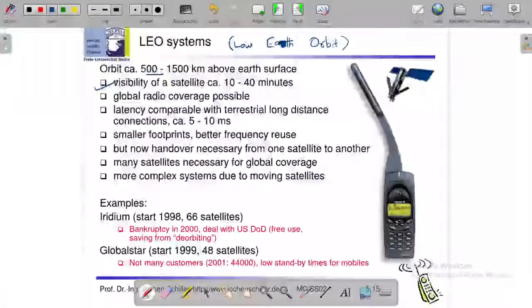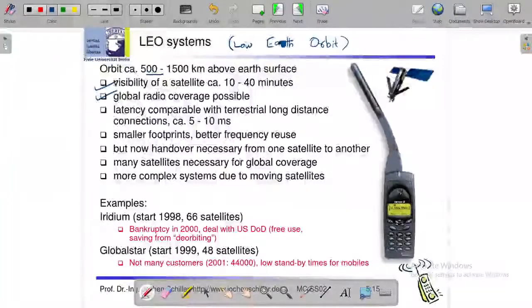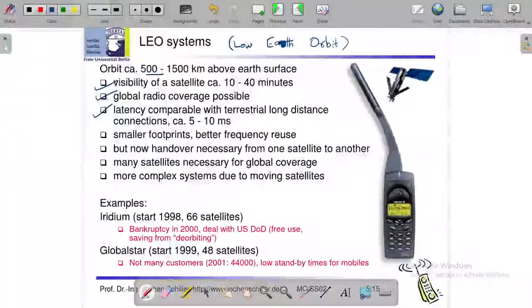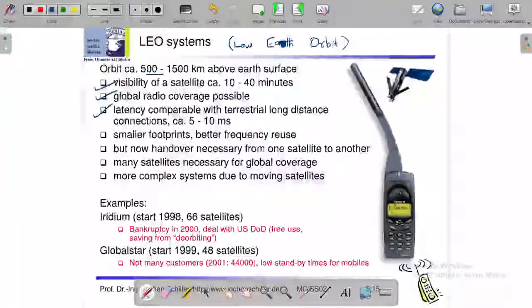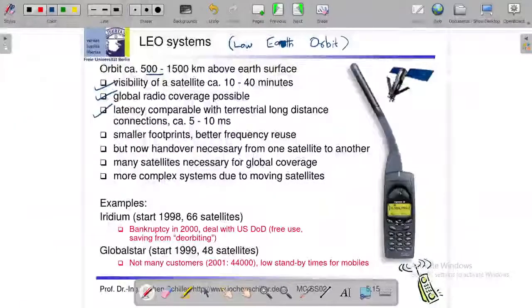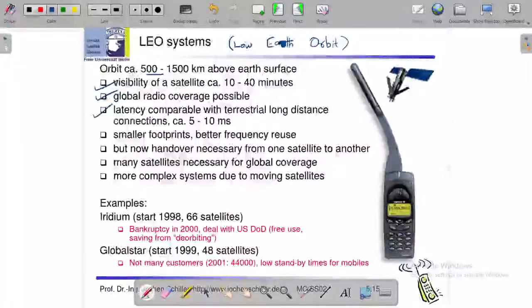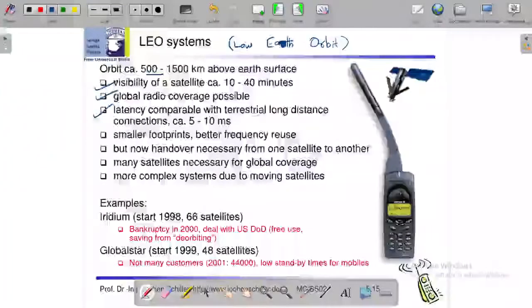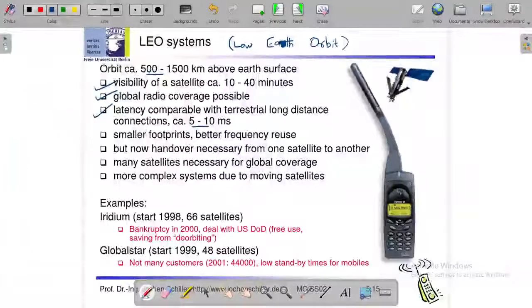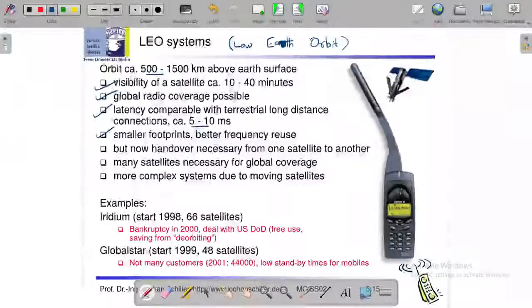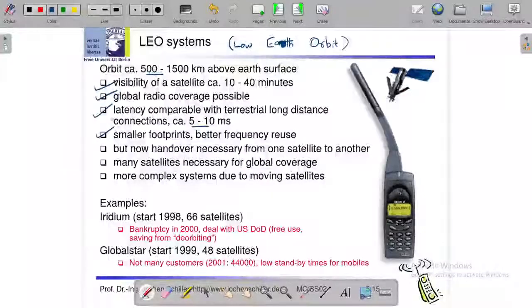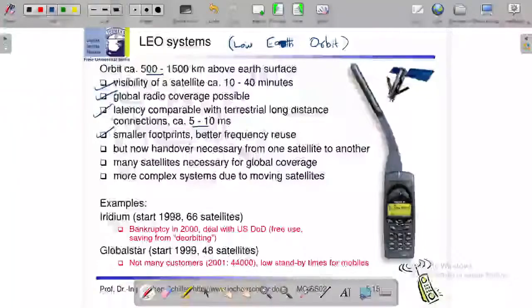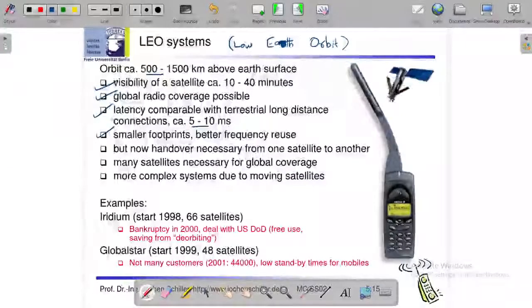Okay, then it has global coverage and radio coverage and latency is comparable with terrestrial long distance connections, long distance connections and distance we can use. That is about 5 to 10 milliseconds. If we are using smaller footprints then we will be getting better frequency reuse and the footprint is good. We can see global radio coverage.